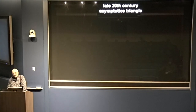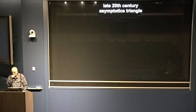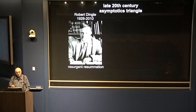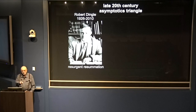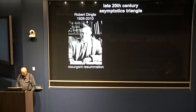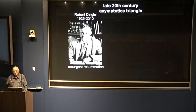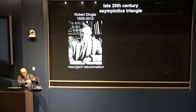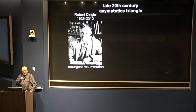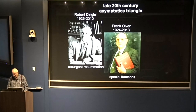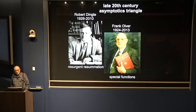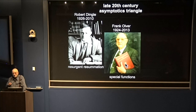Now I want to celebrate three people. There's Dingle, who I think was the deepest — his contributions were the first real improvement since Stokes, after the misdirection from Poincaré. Mathematicians had universally used Poincaré's definition to get error bounds. But now error bounds that mathematicians get are much more sophisticated because they use the idea of going to the least term and then repeated resummation. Someone who took that up was Frank Olver, a specialist in special functions.